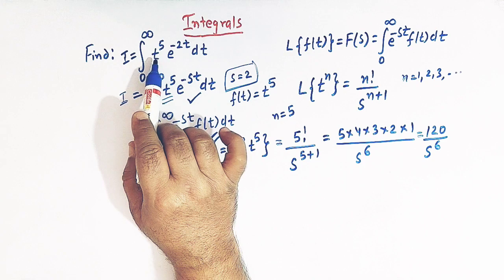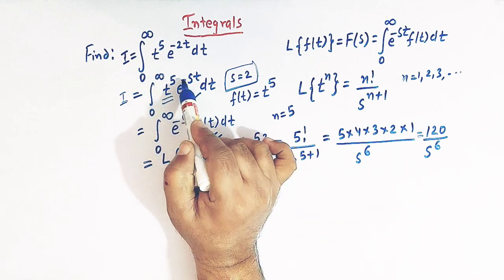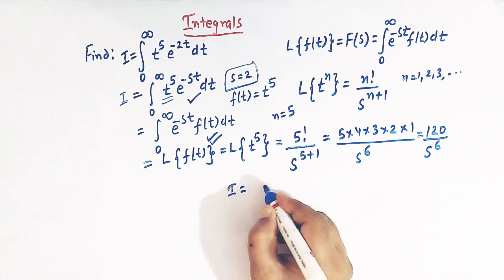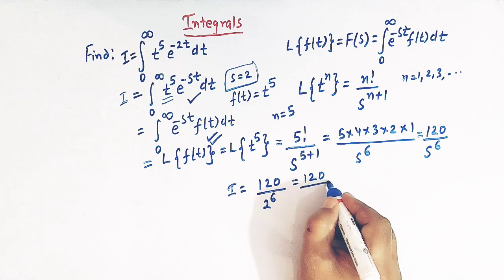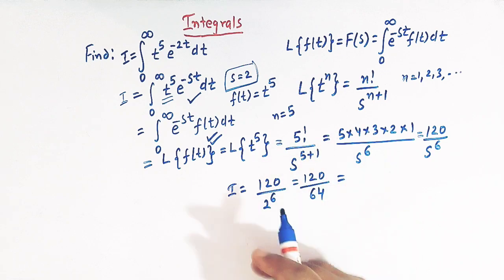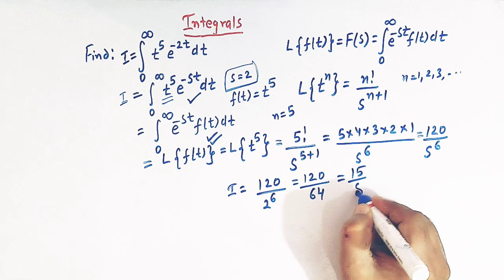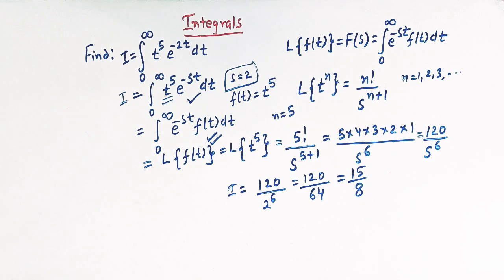We have to find the value of the original integral, which we expressed as the Laplace transform of t raised to 5 times e raised to minus st. When we take s equal to 2, we get the value of integral i as 120 divided by 2 raised to 6, which is 64. Simplifying this fraction gives us 15 over 8. So the value of this integral is equal to 15 divided by 8. This is how, by the application of Laplace transforms, we can solve these kinds of integrals in an easy way.